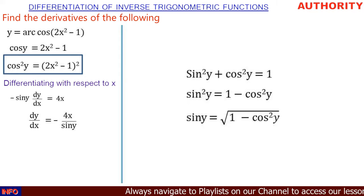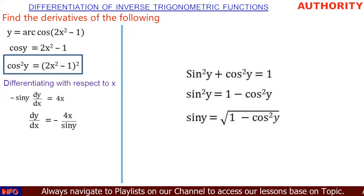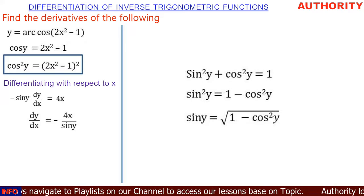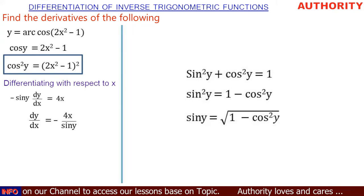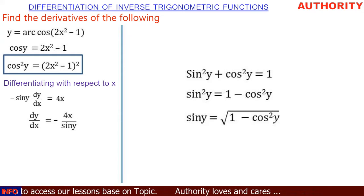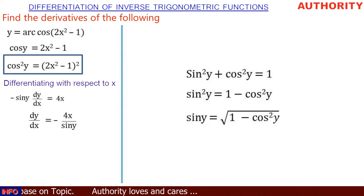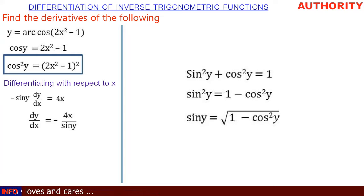Remember that sin²y + cos²y = 1. Let's make sin²y the subject: sin²y = 1 - cos²y. Taking the square root of both sides gives sin y = √(1 - cos²y).